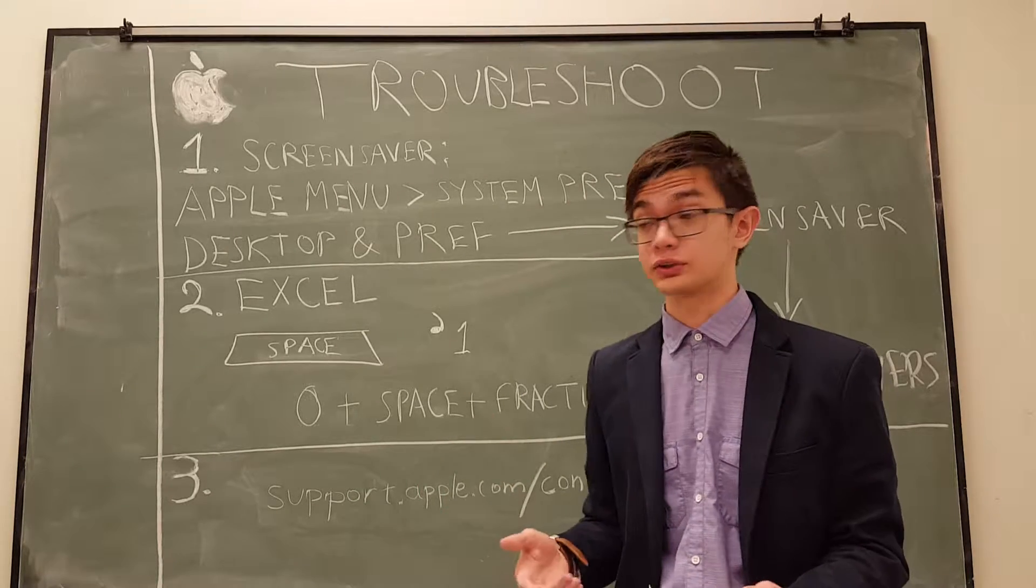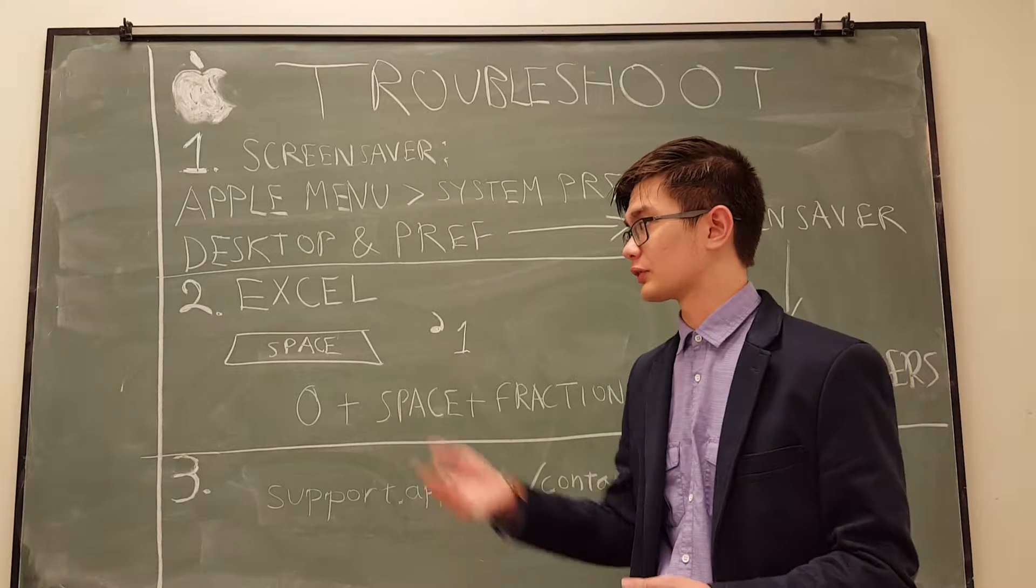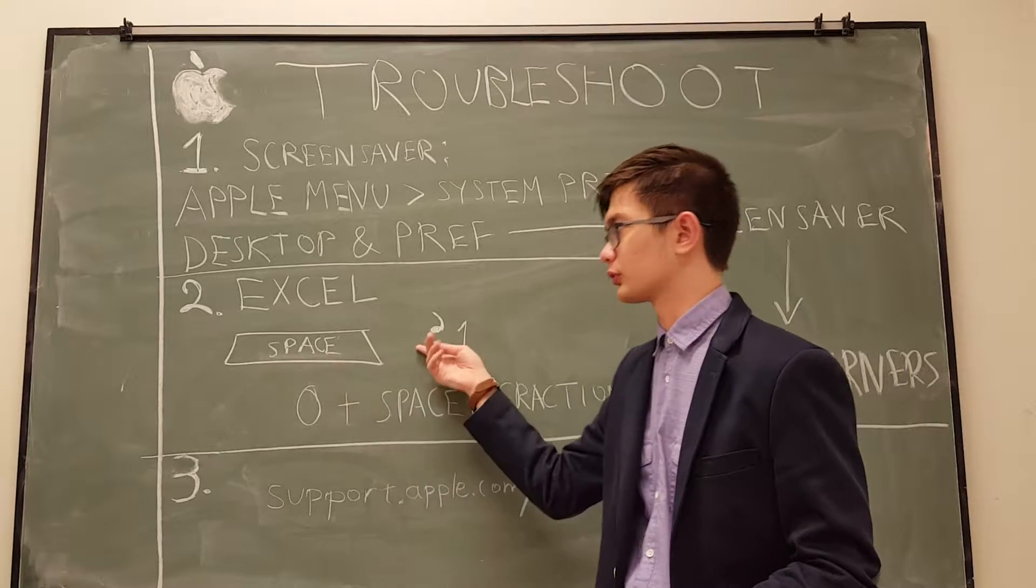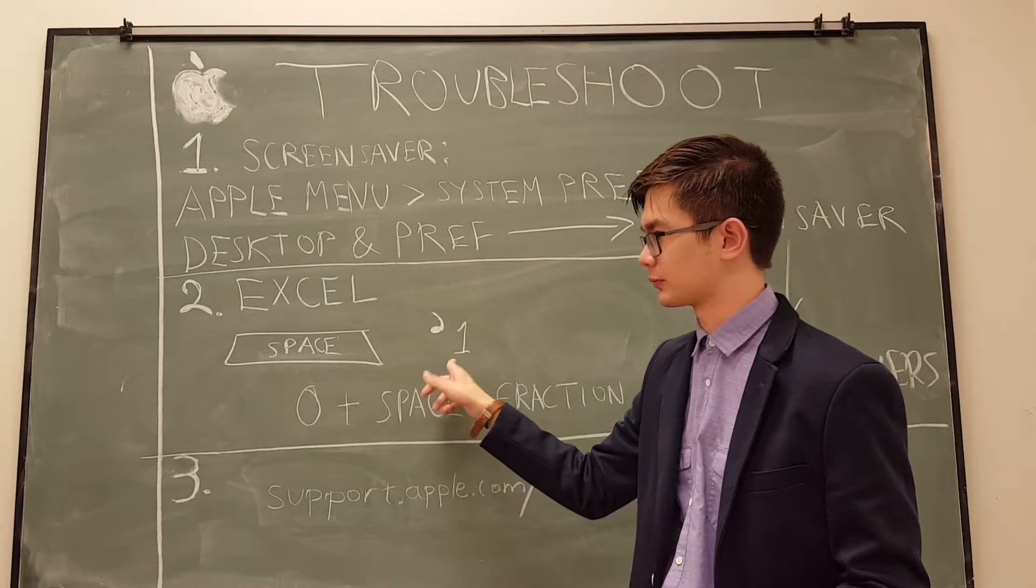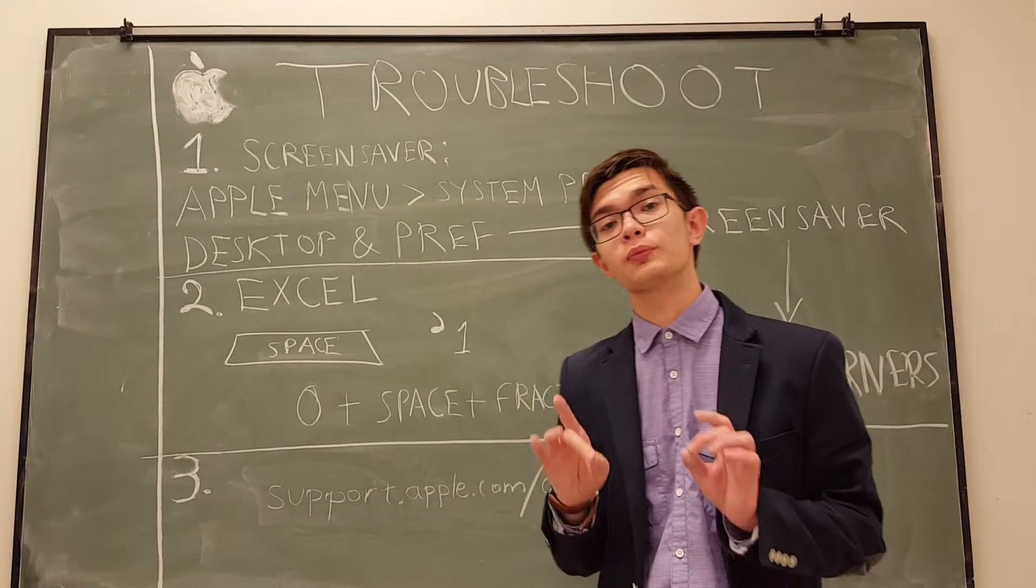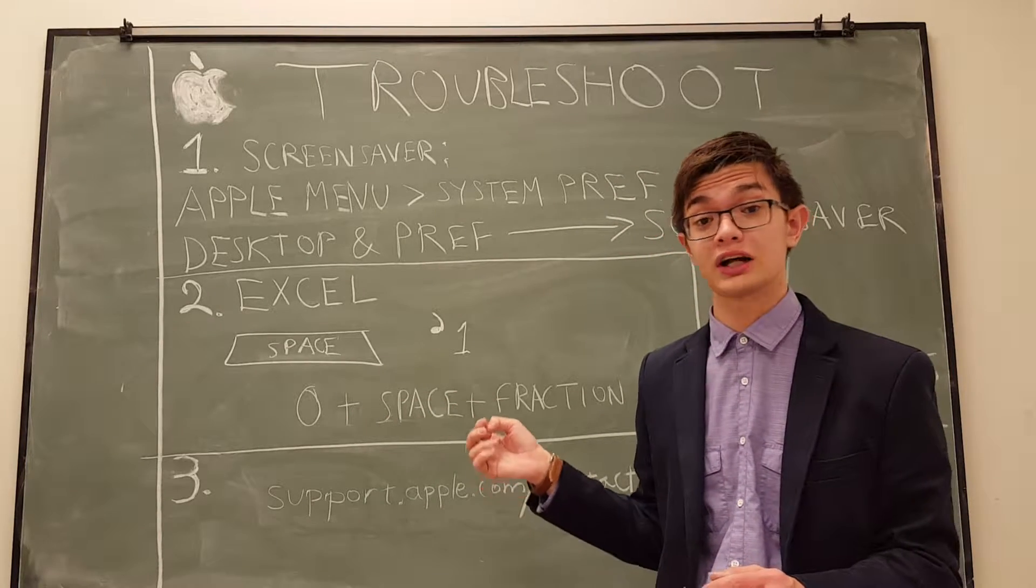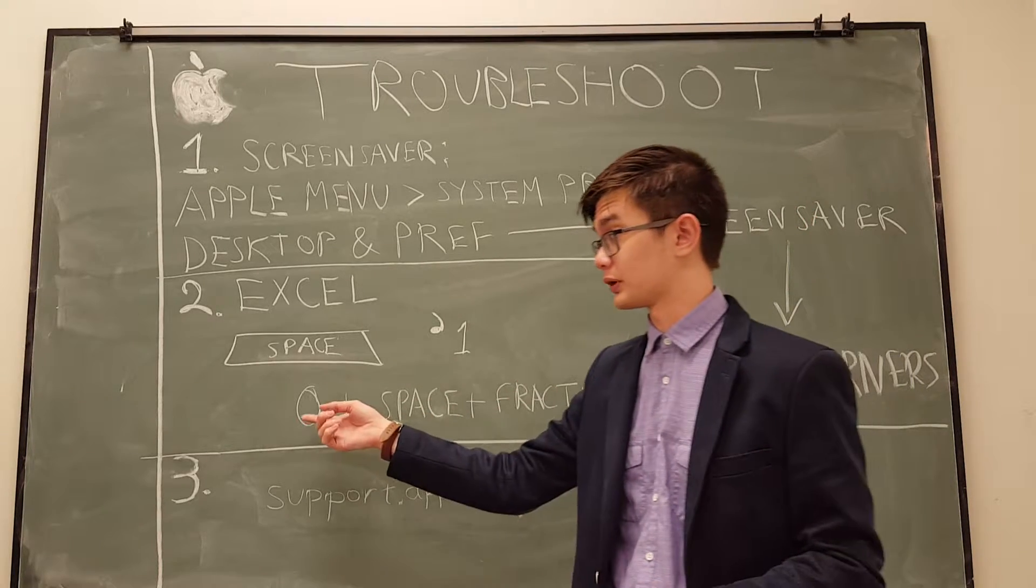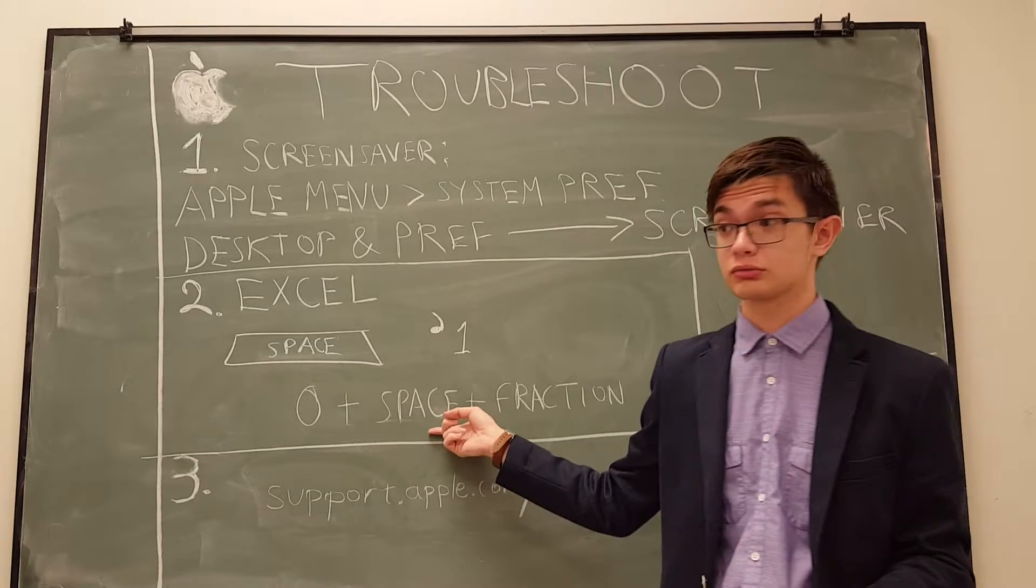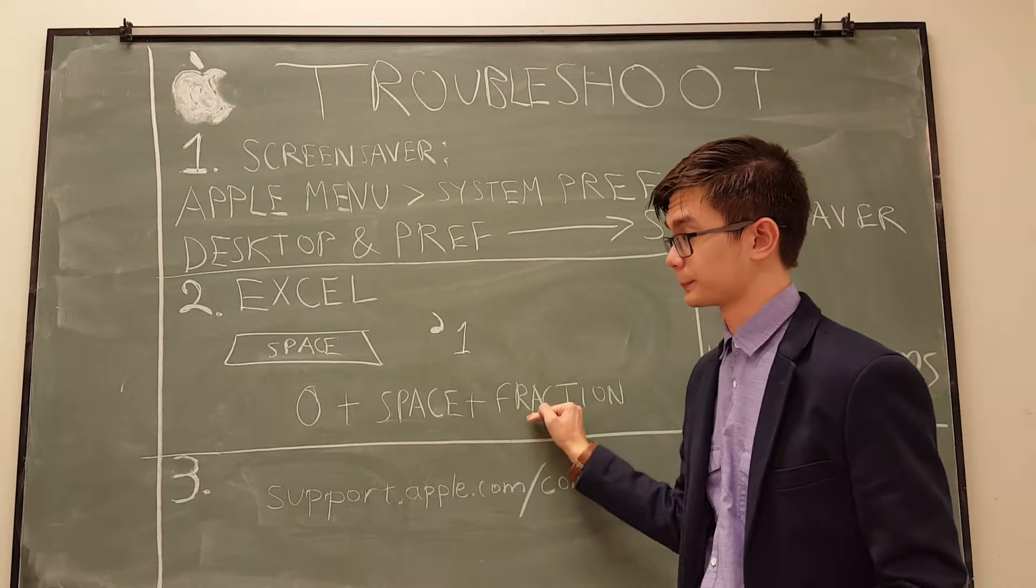To remove that function, simply hit space before typing the number. Alternatively, type an apostrophe before the number to prevent your numbers from switching. If your problem only occurs with fractions, type zero plus space then the fraction. These two parts should disappear once you type this in.